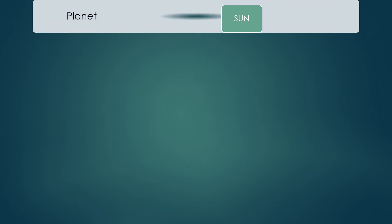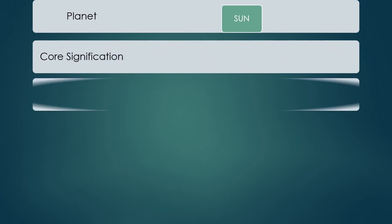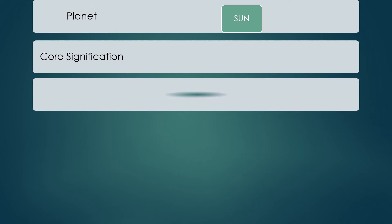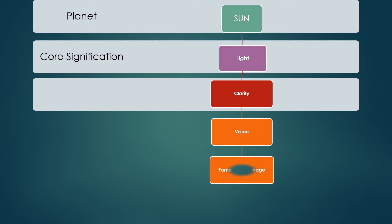Sun is the creator — Sun creates life on earth, so creativity also comes under the signification of Sun. In the natural zodiac, Sun rules the fifth house, so all fifth house implications come under Sun's signification. He is the primary life force behind human beings, and in almost every ancient culture Sun is considered as God.